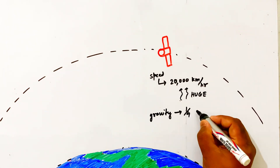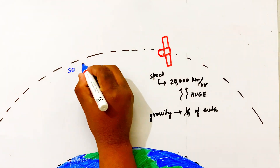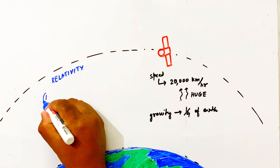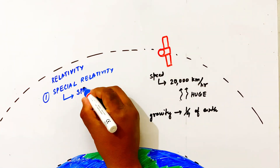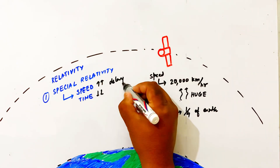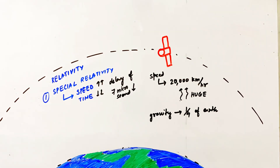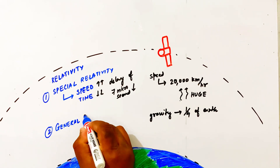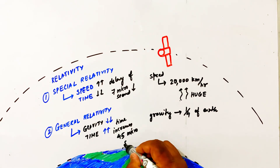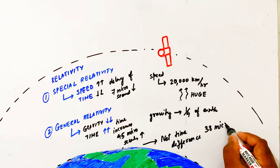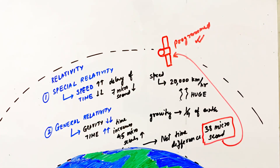The satellite speed is around 20,000 km per hour, which is very high, so gravity is much weaker. Now comes relativity. In special relativity, because of the satellite's high speed, time slows down — a delay of 7 microseconds per day. In general relativity, because the satellite is far from Earth's gravity, time increases — about 45 microseconds per day. So the net effective time difference is about 38 microseconds per day in the satellite, which is very important.